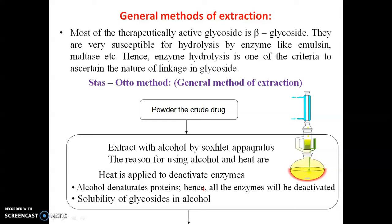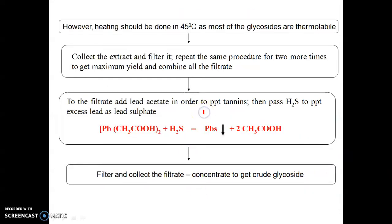However, heating should be done below 45°C, because most glycosides are therapeutically active below this temperature; above 45°C the glycosidic linkage may break due to heat. The process is repeated and the filtrates are combined — this filtrate is a concentrated mass of glycoside. Along with glycosides it contains secondary metabolites like tannins and alkaloids. To remove tannins, a saturated solution of lead acetate is applied to the filtrate.